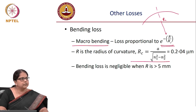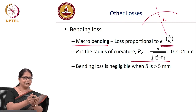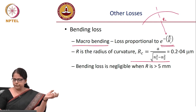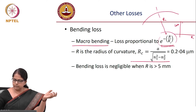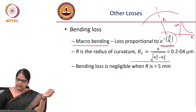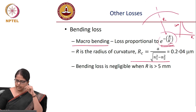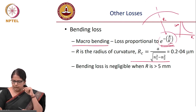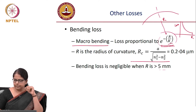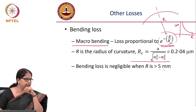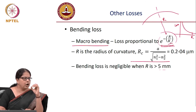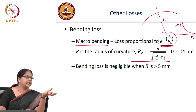This empirical bending loss relation is useful for experiments: measured loss at different bend radii should fit an exponential curve. The exponential decay rate is determined by RC, which depends on numerical aperture. For a standard commercial single-mode fiber, when the radius of curvature exceeds 5 mm, bending loss is negligibly small.